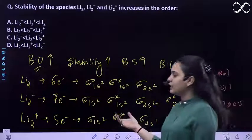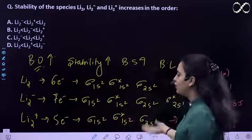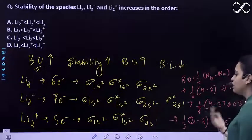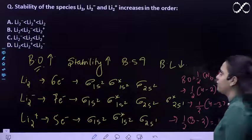So your Li₂⁻ and Li₂⁺, the bond order for both of these is coming out the same, 0.5 and 0.5. But...